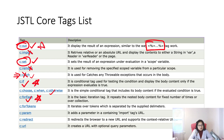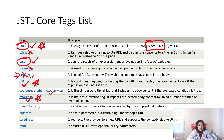c:forEach is very important — you will use it a lot for iteration and looping. c:forTokens iterates over tokens separated by supplied delimiters, like a hyphen or comma-separated values. I personally never used c:forTokens.